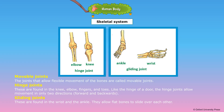The joints that allow flexible movement of the bones are called movable joints. Hinge joints are found in the knee, elbow, fingers and toes. Like the hinge of a door, the hinge joints allow movement in only two directions: forward and backwards.